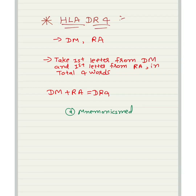Now we will learn about HLA-DR4. It is for Diabetes Mellitus and Rheumatoid Arthritis. Take the first letter from DM and the first letter from RA — total four letters — so DM plus RA gives DR4. You can remember easily via this mnemonic HLA-DR4.